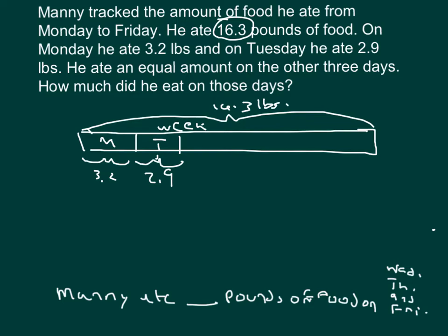Now for the remainder of the week, that's Wednesday through Friday. That's what's in that bar model right there. It says that it's an equal amount on the other three days. So the remainder of the bar diagram, we can go ahead and divide that into three equal parts.